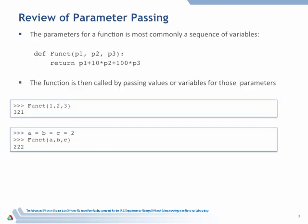As a reminder, when we looked at parameter passing, we had something like this. We have three parameters here for this function, p1, p2, and p3. And this function does something very simple. Takes the first one, adds it to 10 times the second one, and 100 times the third one. And if we call it 1, 2, 3, then it gives it to us in the reverse order, 3, 2, 1.